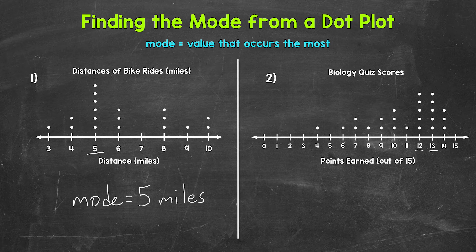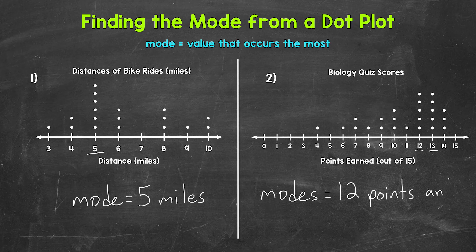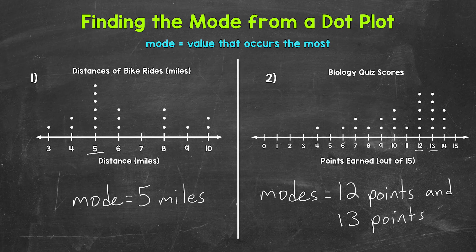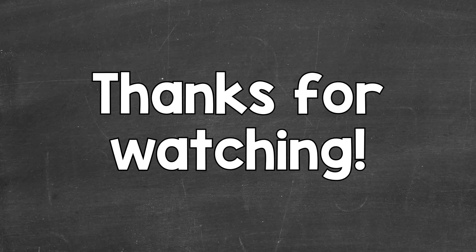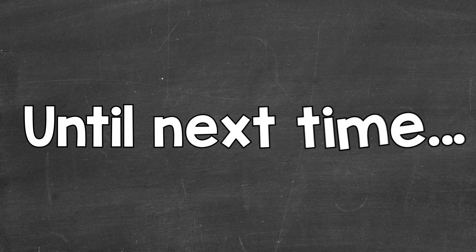Our modes are 12 points and 13 points. If the dataset works out to where there is more than one mode, that's perfectly okay. So there you have it — that's how to find the mode from a dot plot. I hope that helped. Thanks so much for watching. Until next time, peace.